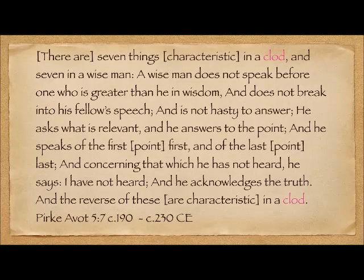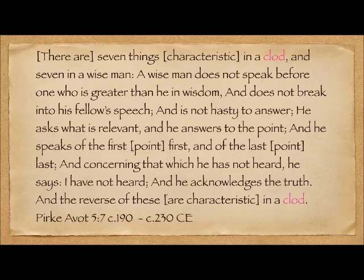There are seven characteristics in a clod — an uneducated or uncultivated person — and seven in a wise man. The wise man's characteristics: he does not speak before one who is greater than he in wisdom; he does not break into his fellow's speech and is not hasty to answer; he asks what is relevant and answers to the point; he speaks of the first point first and of the last point last; concerning that which he has not heard, he says 'I have not heard'; and he acknowledges the truth. The reverse of these characteristics — this is the Golem. He's a clod.